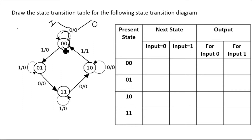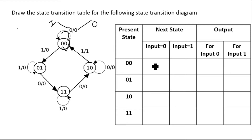Here I have taken present states: zero-zero, zero-one, one-one, one-zero. Now we are going to find the next state — when the input is zero and when the input is one, what will be the output value. For zero-zero with zero input, this arrow is again reaching to zero-zero, so the next state is zero-zero and the output is zero.